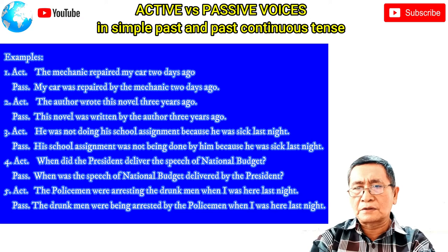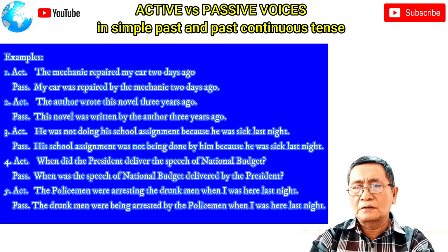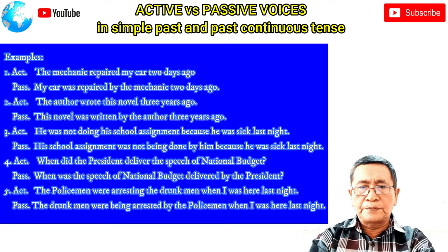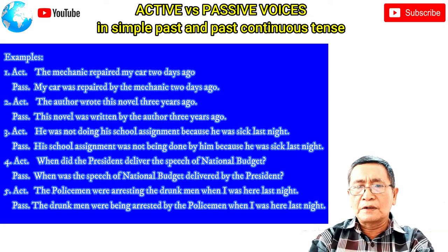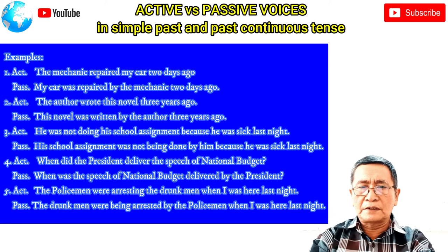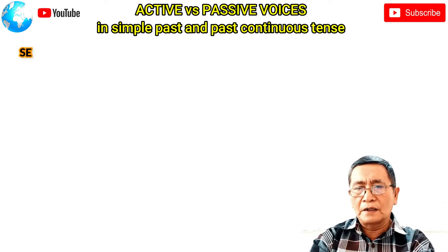Number three — active sentence: 'He was not doing his school assignment because he was sick last night.' Passive sentence: 'His school assignment was not being done by him because he was sick last night.' Number four — active: 'When did the president deliver the speech of national budget?' Passive: 'When was the speech of national budget delivered by the president?' Number five — active: 'The policemen were arresting the drunk man when I was here last night.' Passive: 'The drunk man was being arrested by the policemen when I was here last night.'